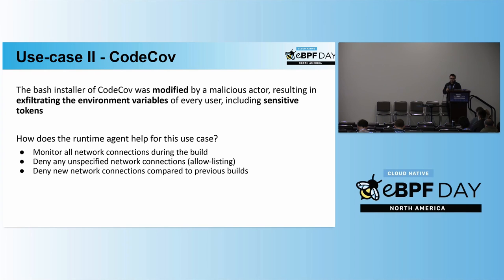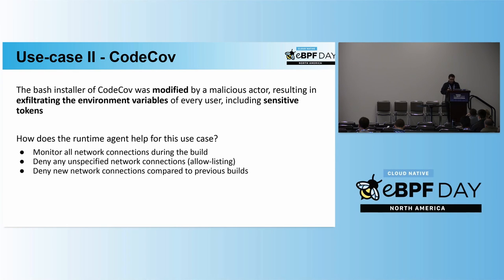Why the environment variables? Because the CI process has privileged access to many systems. Usually that access is done through secret tokens saved as environment variables. Specifically in Codecov, they were after GitHub tokens that would let them access private repositories.